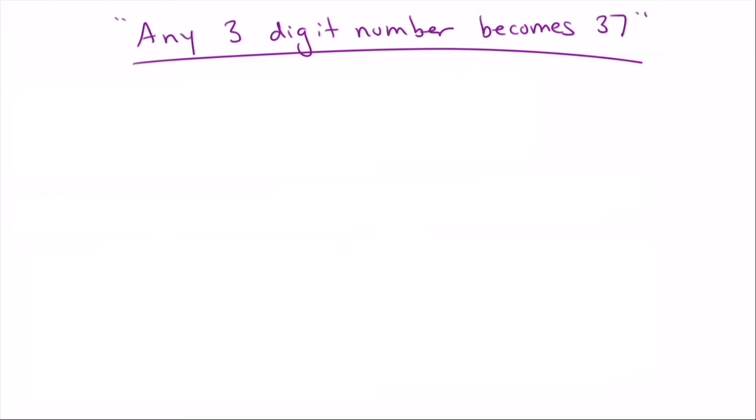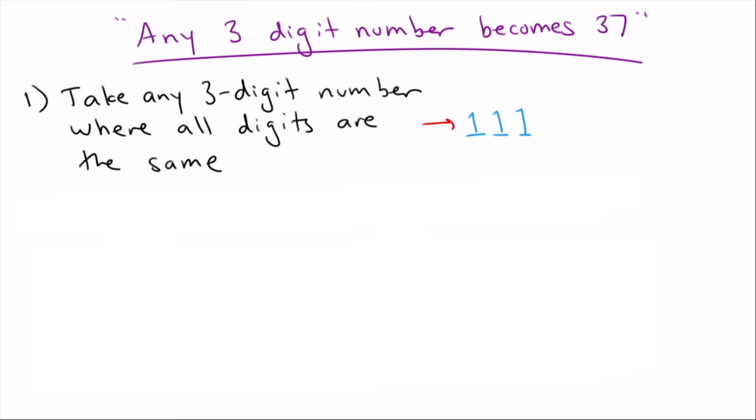Let's go on to the next problem. This next problem I'm calling any three digit number becomes 37. So how it works is take any three digit number where all three digits are the same. For example, 111. You could also take 222, 333, any three digit number like this would work. Next, add up the digits. So in this case, it's 111. So we add up one plus one plus one, and that gives us three.